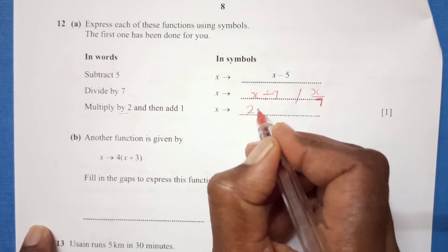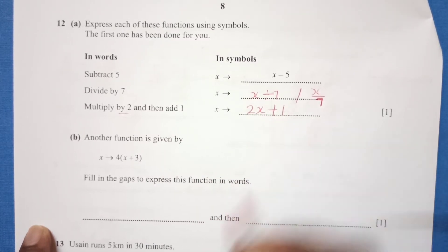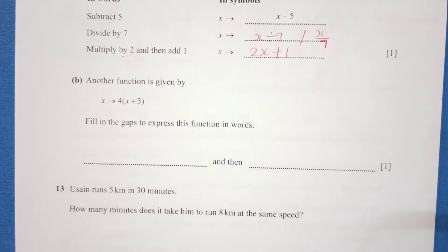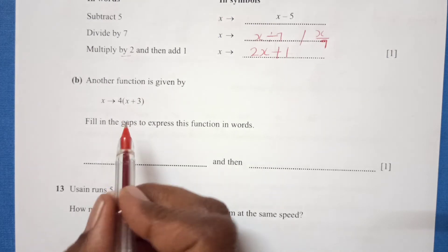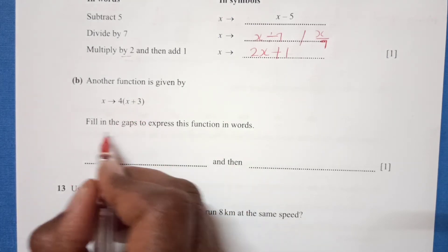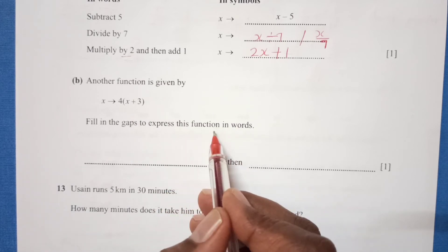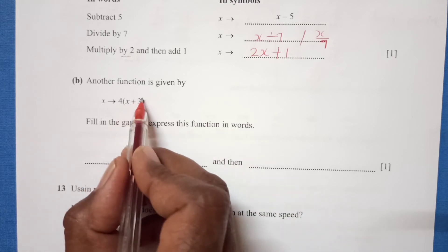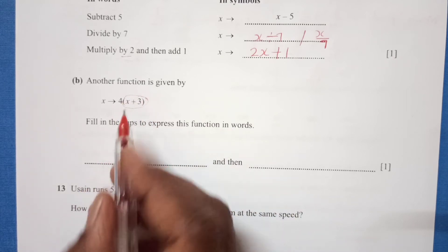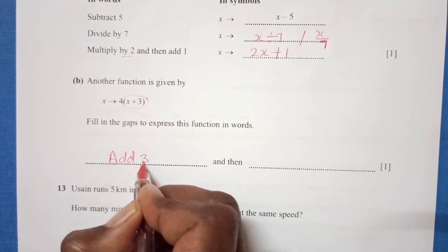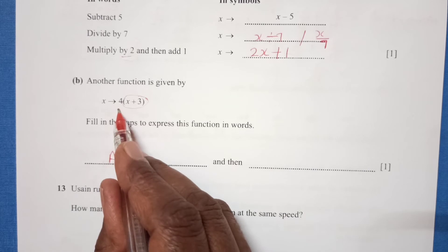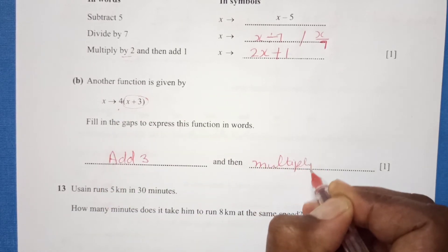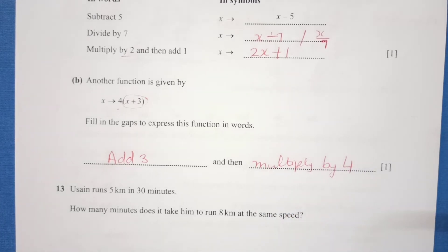Part b: Another function is given by 4 into x plus 3. Fill in the gap to express this function in words. You can see we have this thing in brackets, so that means first we are going to write here: add 3 and then multiply by 4.